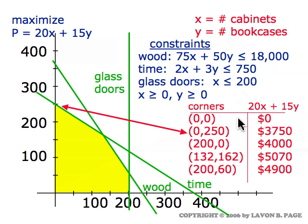One of the corner points corresponds to making only bookcases. We can make no cabinets and 250 bookcases for a profit of $3,750. One of the corner points corresponds to a strategy of making only the cabinets. We can make 200 cabinets and no bookcases for a profit of $4,000. One of our corner points corresponds to a strategy of making 132 cabinets and 162 bookcases for a total profit of $5,070.